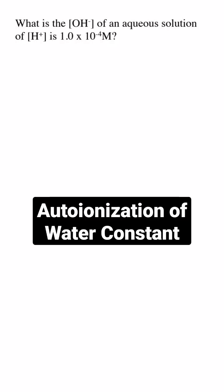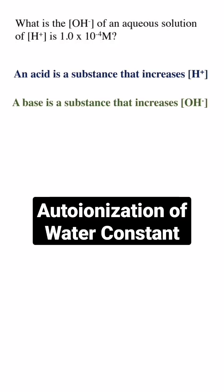Acids and bases are defined in a few different ways. In one definition, an acid is a substance that increases the hydrogen ion concentration in water, and a base is a substance that increases the hydroxide ion concentration.